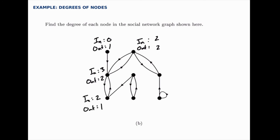This one here has one edge coming in, and two edges going out. Down here, both are one. Over here, there are two edges coming in, one edge going out.